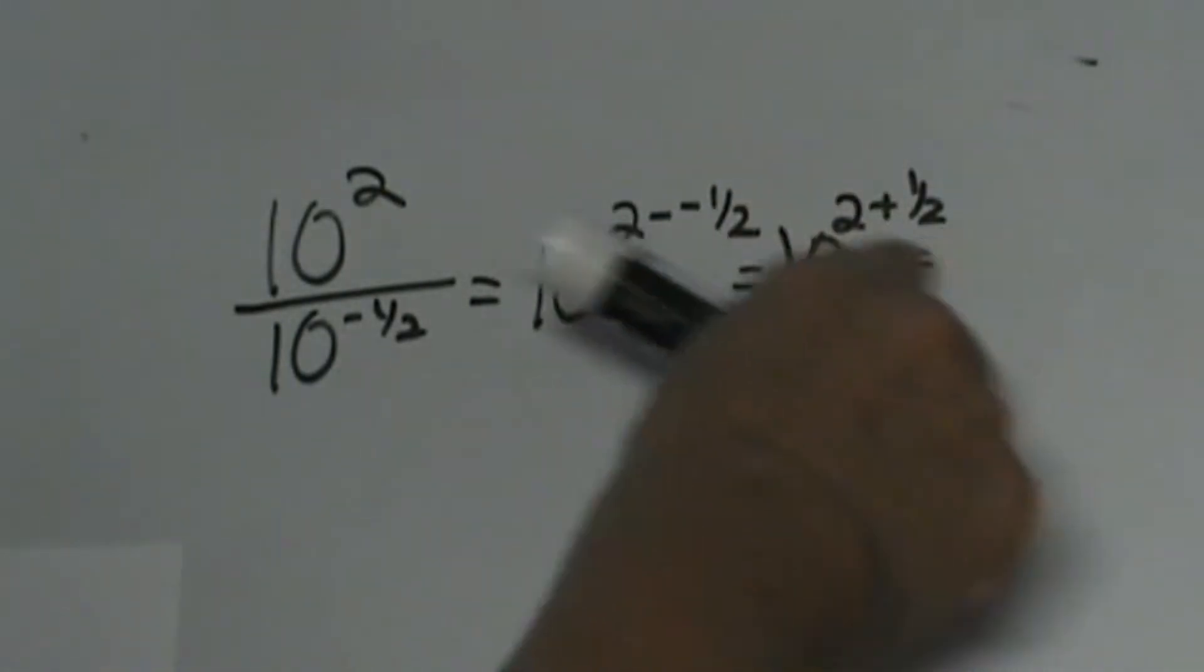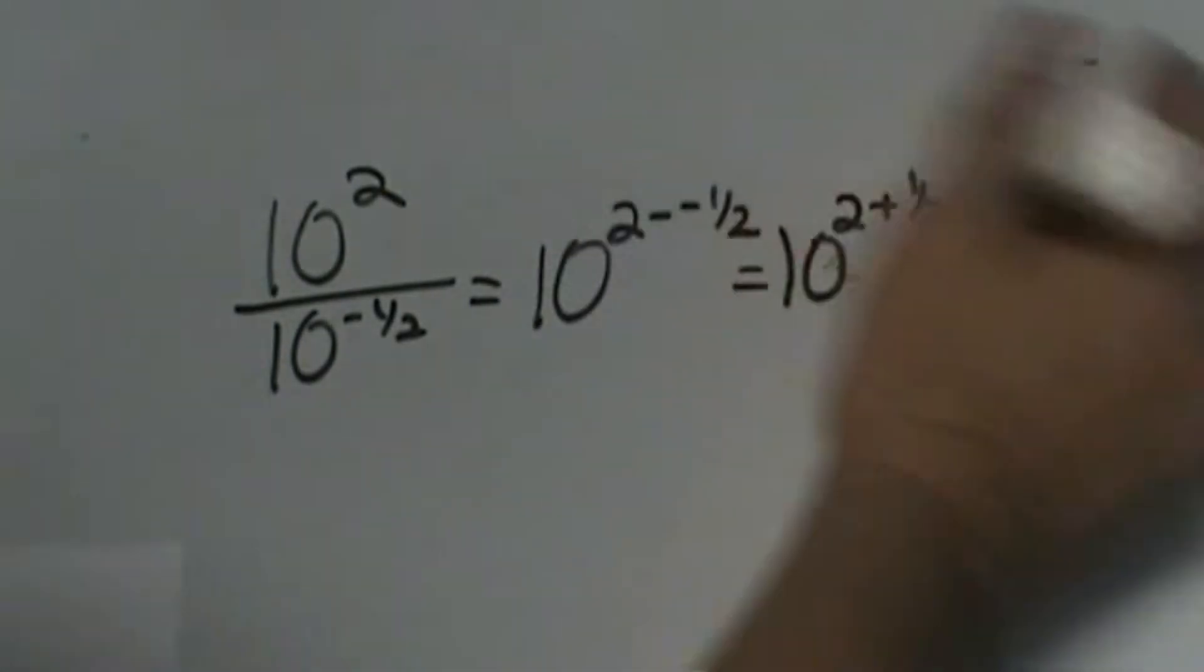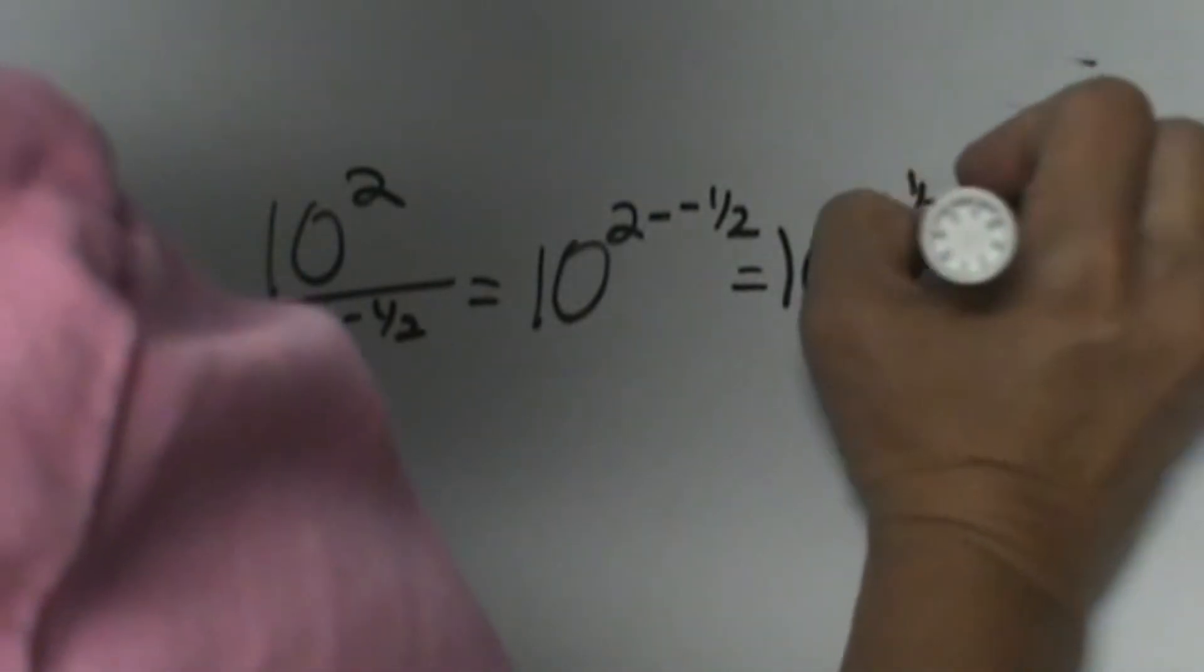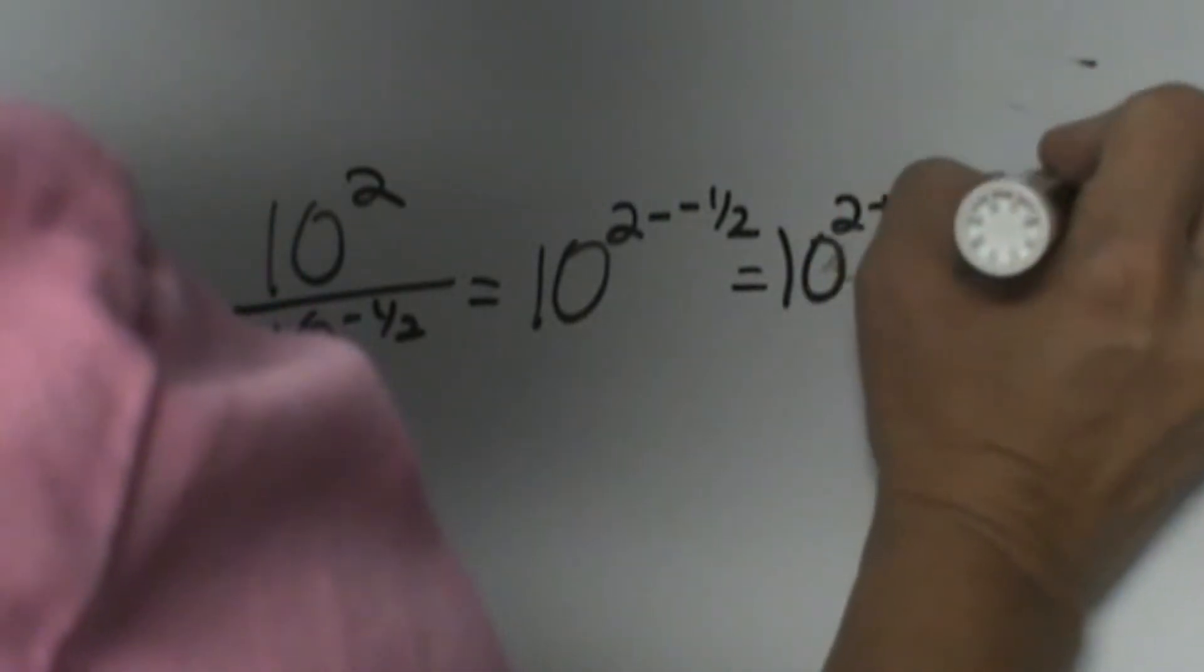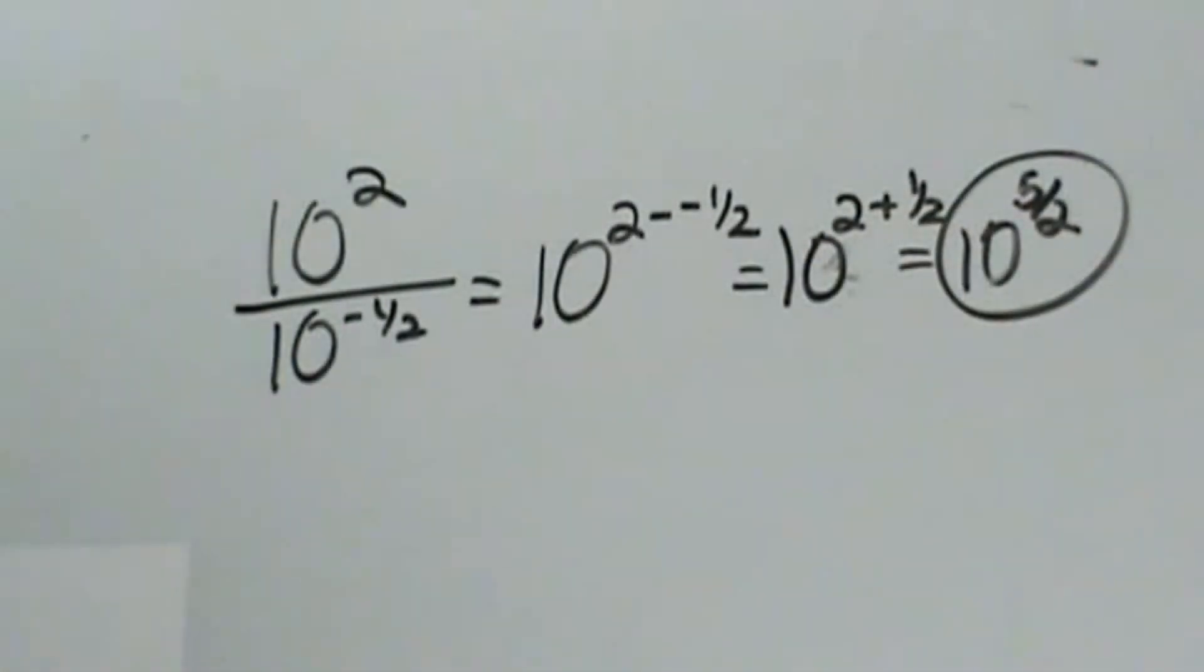So let's go ahead and do the circle trick. 2 and a half is 2 times 2 plus 1, which is 5/2. So that is 10 to the 5/2. That would be our answer.